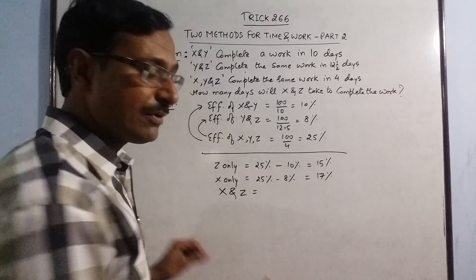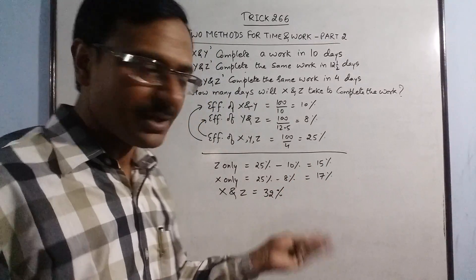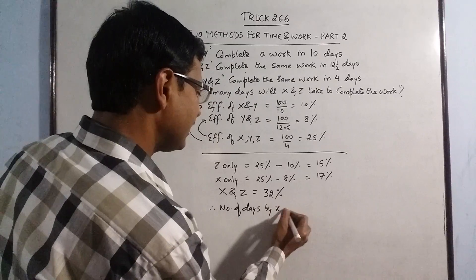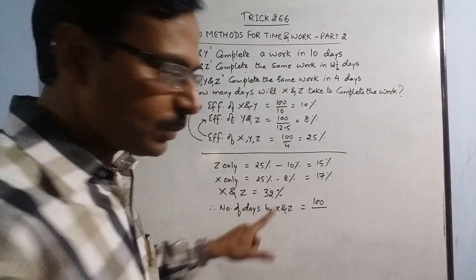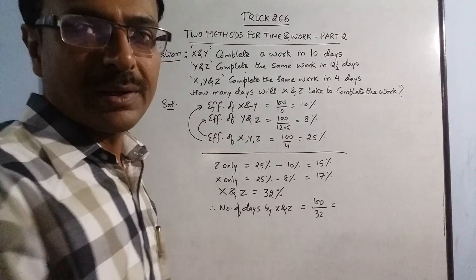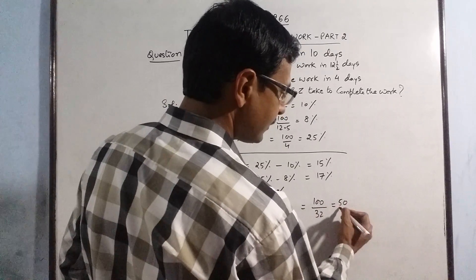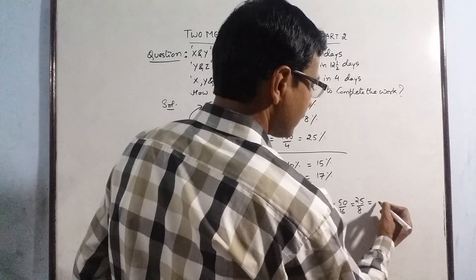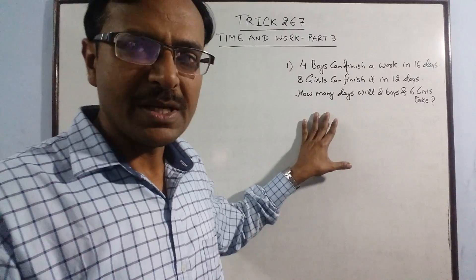Now X and Z working together: add their individual efficiencies, 15% + 17% = 32%. Number of days taken by X and Z = 100 divided by 32. Cancelling by 4 gives 25/8. As a mixed fraction: 3 and 1/8 days is the final answer. This type of question is very common in competitive exams.